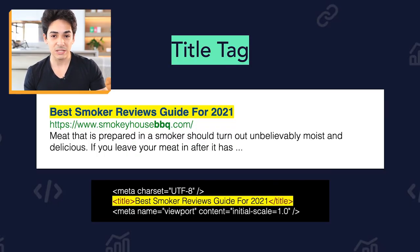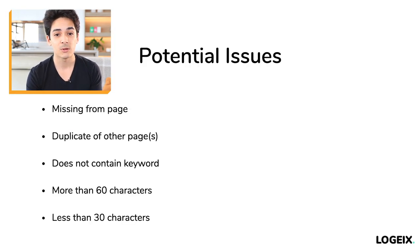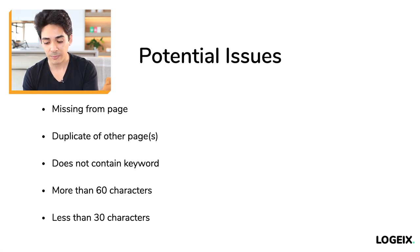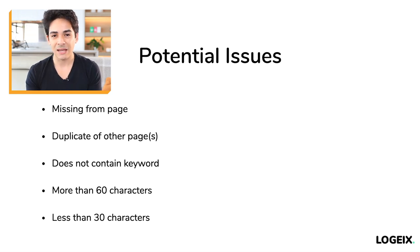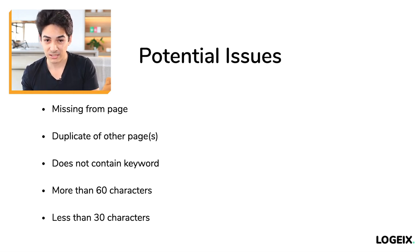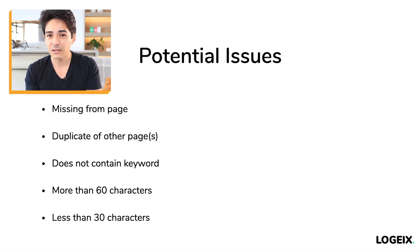Next we have title tags. They show in the Google search results, and you want to have your keyword in there. An example title tag would be 'Best Smoker Reviews Guide for 2021.' Potential issues include: the title missing from the page entirely, it being a duplicate of another page, it not containing the keyword, or it being more than 60 characters. Over 60 characters isn't necessarily a problem, but it's an indicator you may want to shorten it to the 50-60 character range.